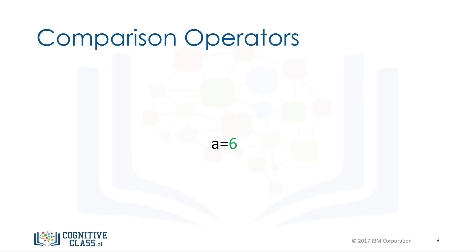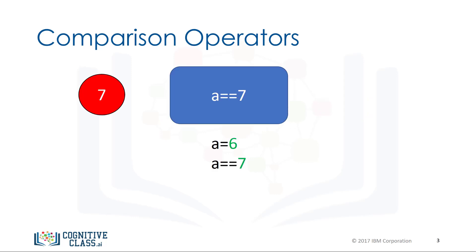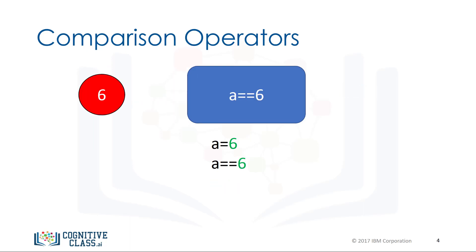Let's say we assign a value of a to 6. We can use the equality operator, denoted with two equal signs, to determine if two values are equal. In this case, if 7 is equal to 6 — as 6 is not equal to 7 — the result is false. If we performed an equality test for the value 6, the two values would be equal, and as a result, we would get a true.